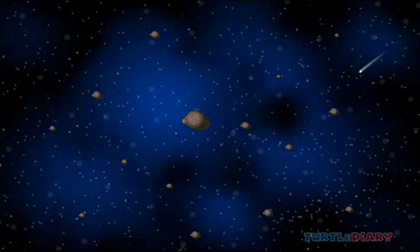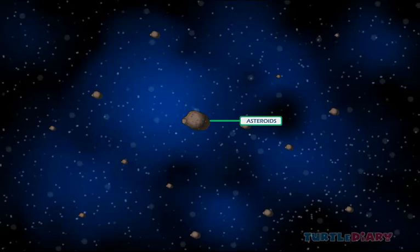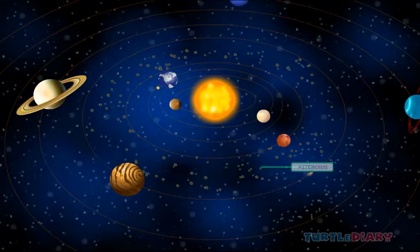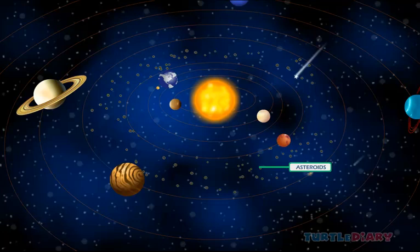There are some small rocky bodies in the solar system that have been left over from the formation of the planets. These are called asteroids. Asteroids don't have enough gravity to pull them into the shape of a ball. Most of them lie in between Mars and Jupiter.